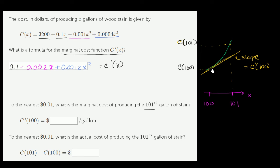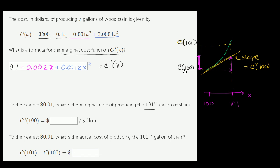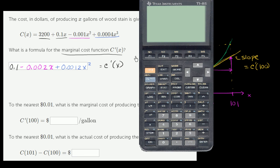We figure out the slope c prime of 100 and then multiply it by that one extra unit. Remember, slope is change in y over change in x; if you multiply it by a change in x of one unit, you get the resulting change in y — which is an approximation for the actual cost increase.